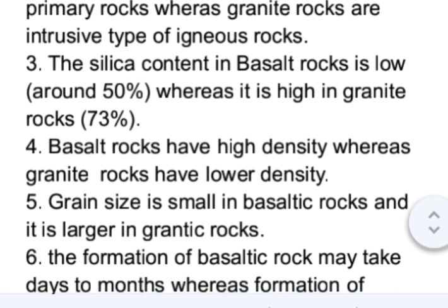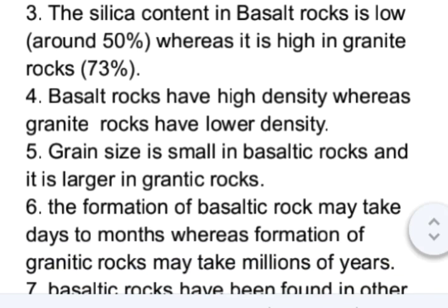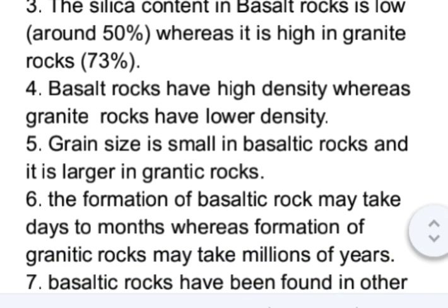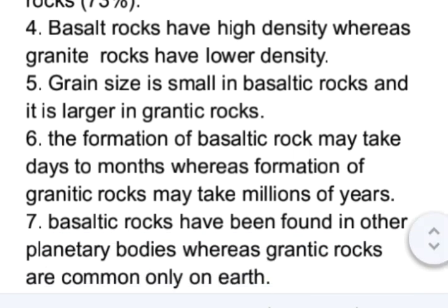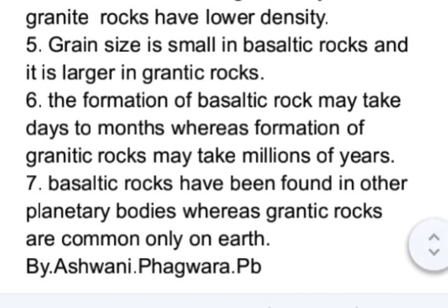Basalt rocks have high density whereas granite rocks have lower density. Grain size is small in basaltic rocks and larger in granite rocks. The formation of basaltic rocks may take days to months whereas the formation of granite rocks may take millions of years. Basaltic rocks have been found in other planetary bodies whereas granite rocks are common only on earth.